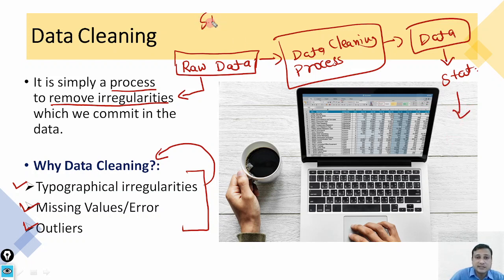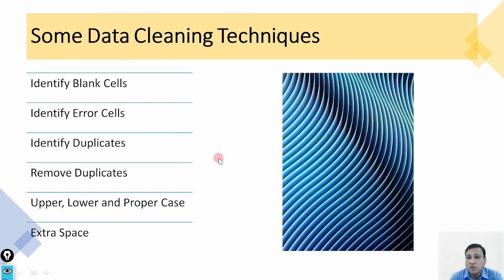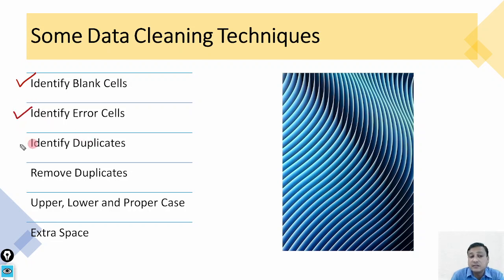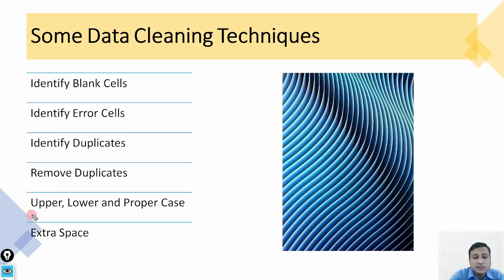If we apply statistics on raw data, it may lead to confusing or wrong results. There are different techniques of data cleaning. We will discuss a few techniques here: how to identify blank cells, how to identify error cells, how to identify and remove duplicates, how to apply upper, lower, and proper case on qualitative data, and how to remove extra spaces in alphabetical data.